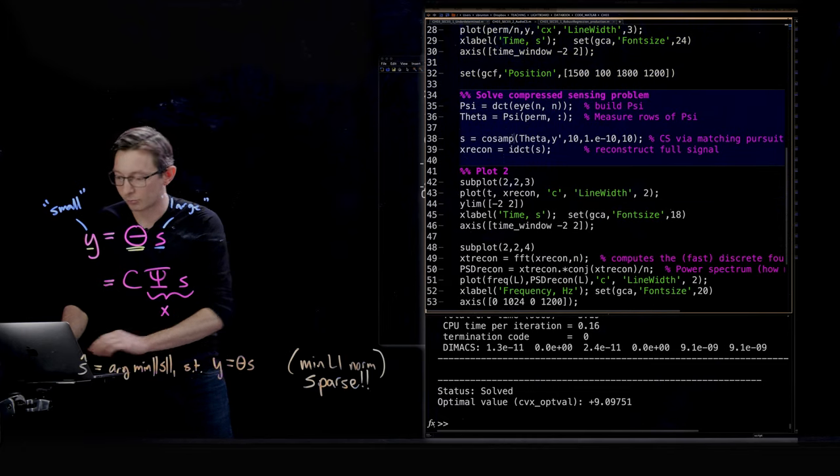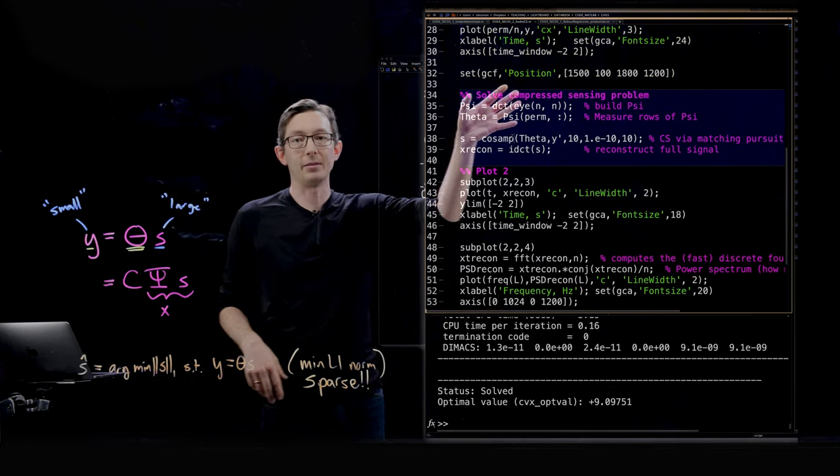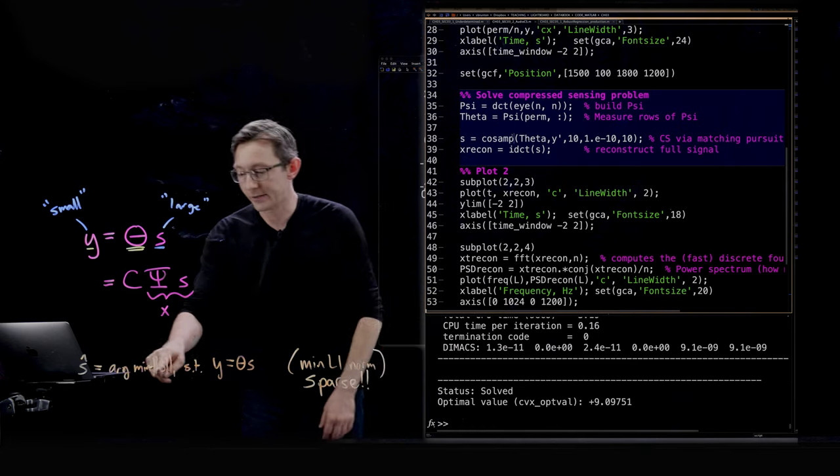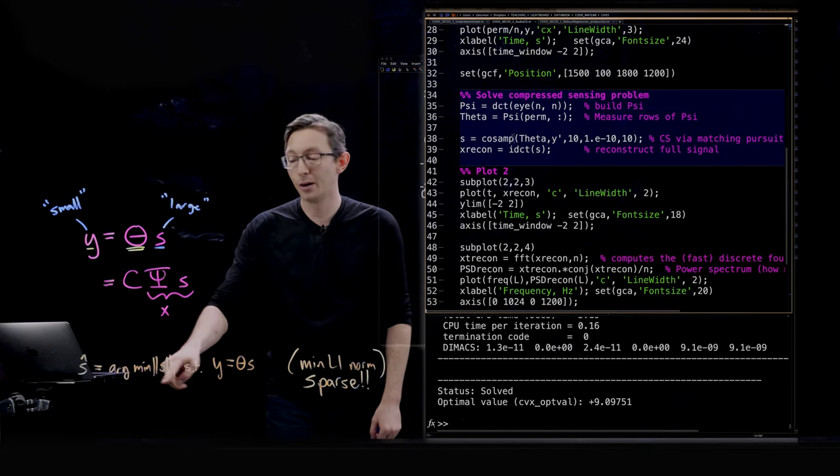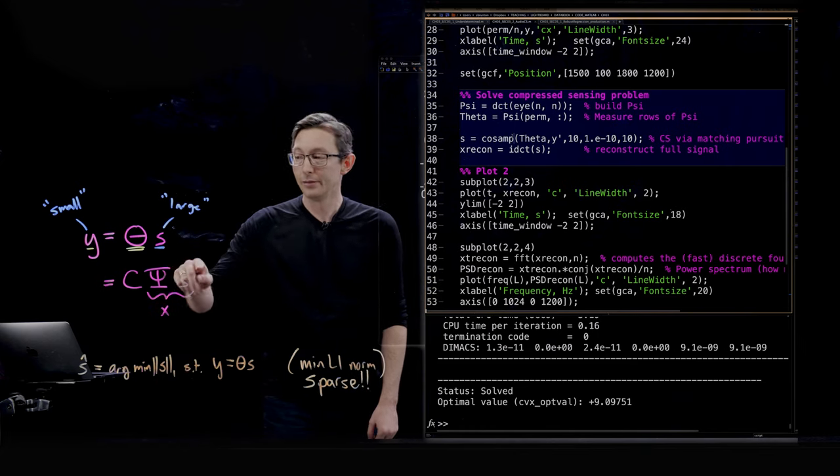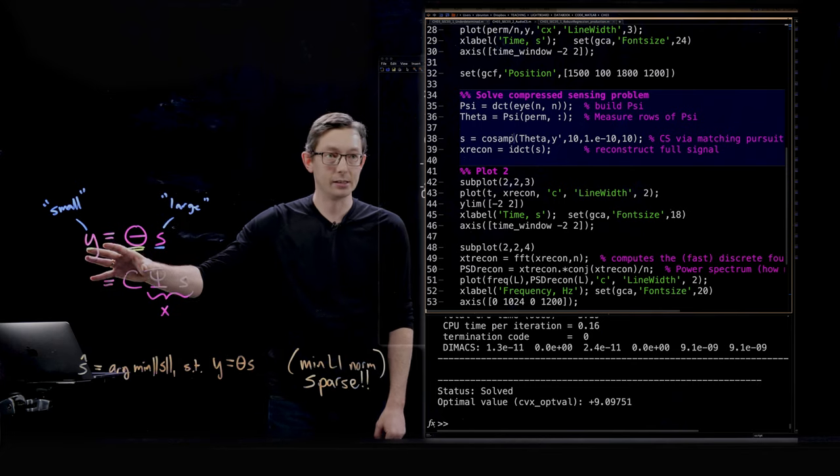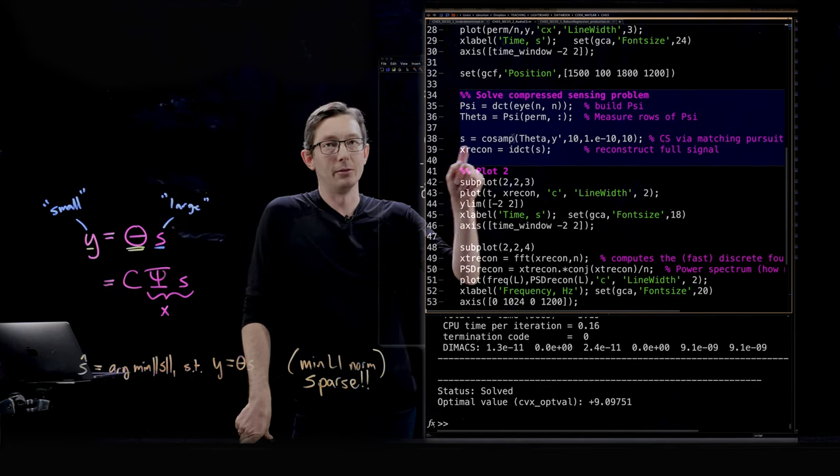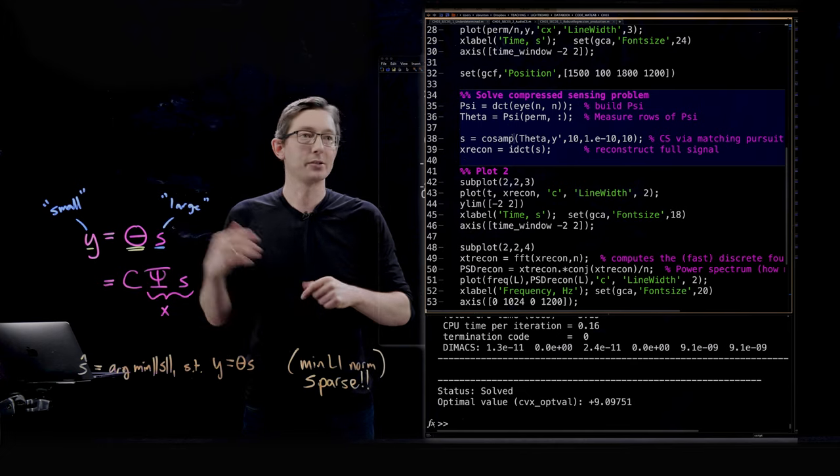And now we're actually going to run the compressed sensing optimization. We're basically going to solve for the minimum L1 norm solution S that satisfies my system of equations, theta S equals Y.